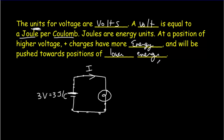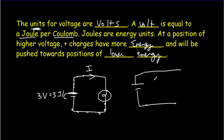In a sense, this circuit is kind of like a parallel plate where we have a positive plate and a negative plate. The charges will move from the positive plate to the negative plate — from high potential to low potential.